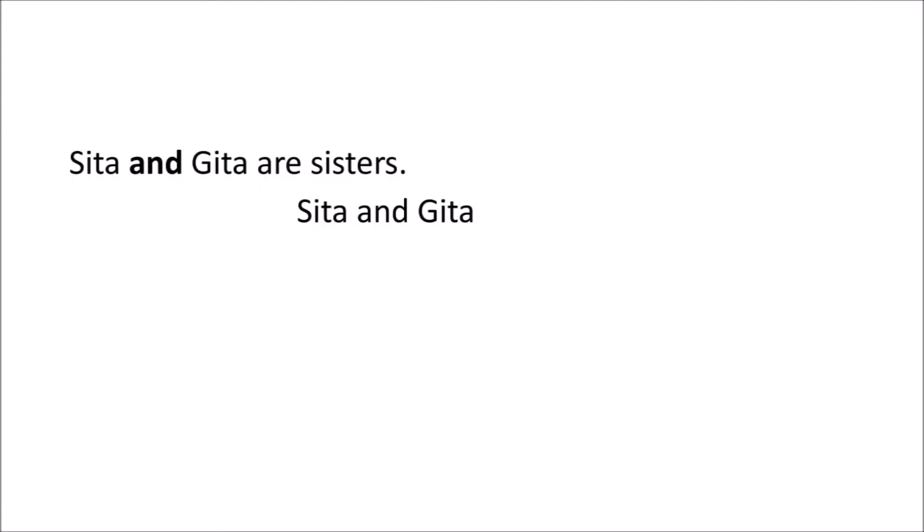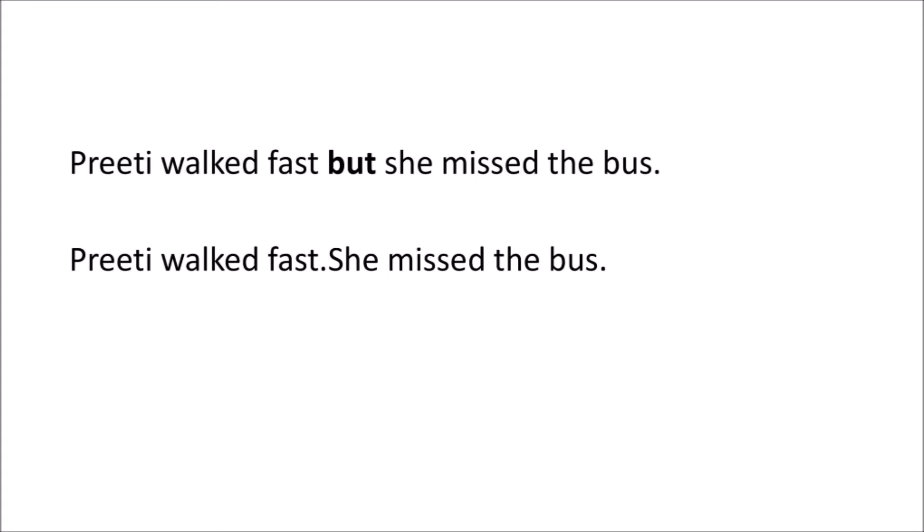Sita and Gita are sisters. In this sentence, the word 'and' joins the two nouns Sita and Gita. Preeti walked fast but she missed the bus. In this sentence, we see that the word 'but' joins two separate sentences.